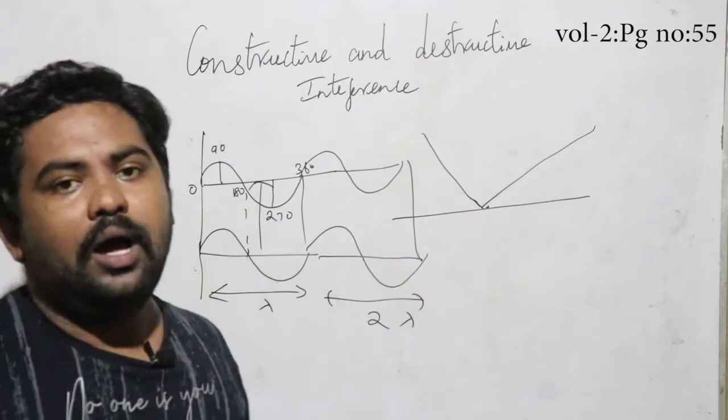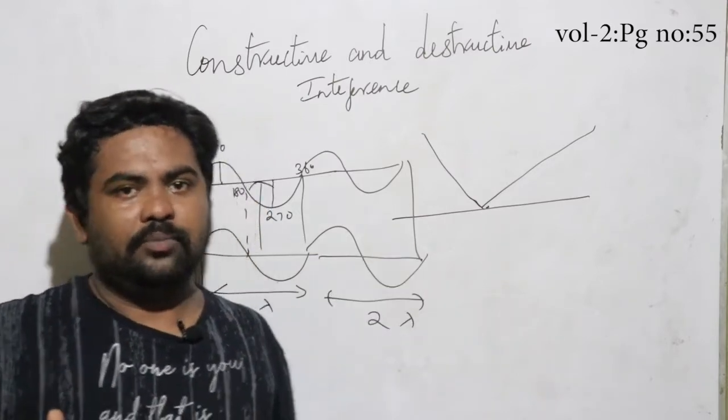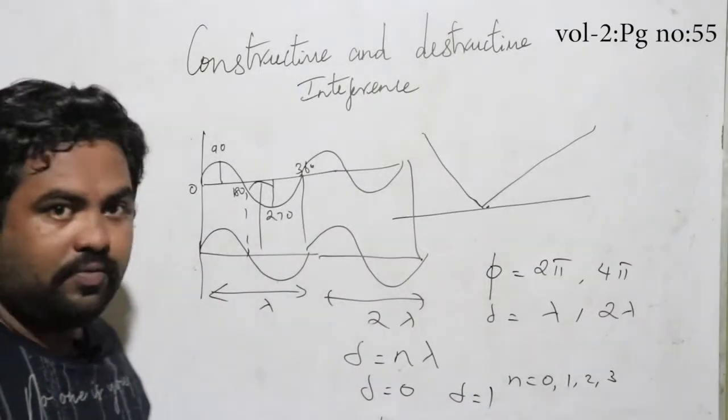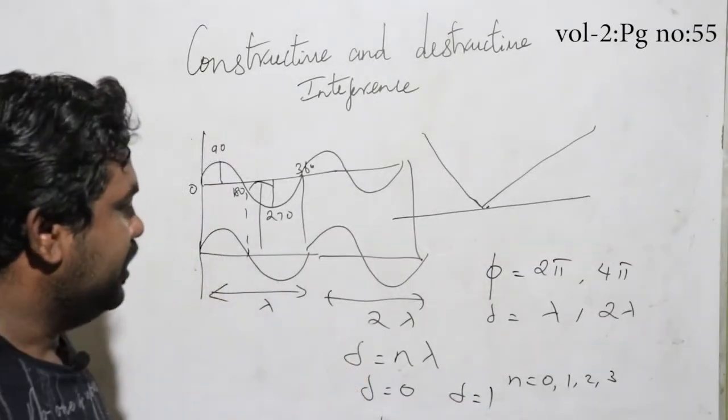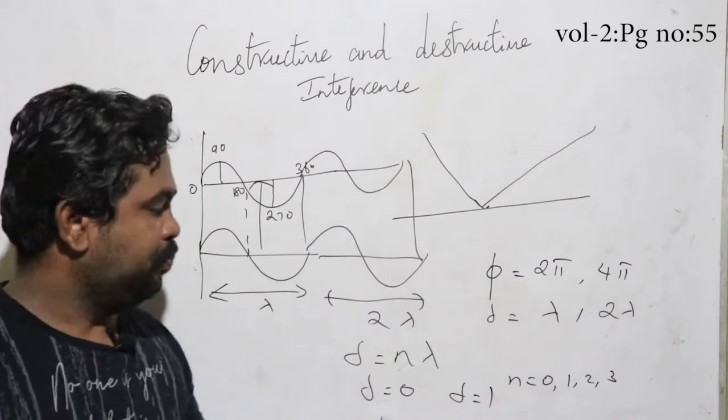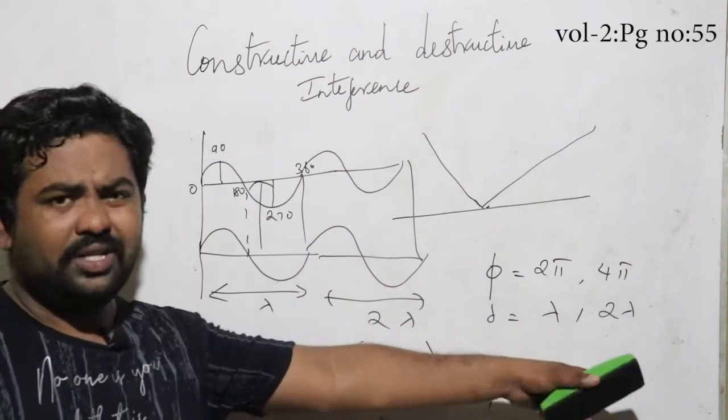For example, delta will be the same. Constructive interference formula: del is equal to n lambda, n is the integer. 0, 1, 2, 3.